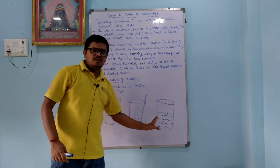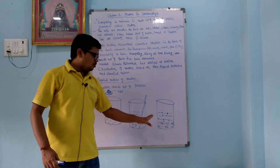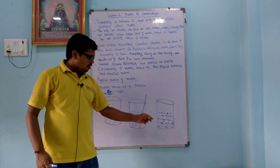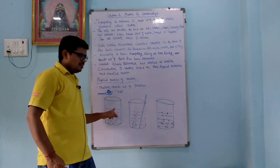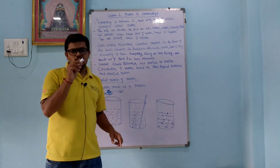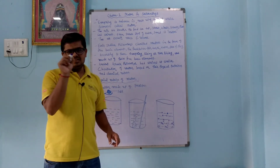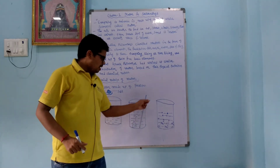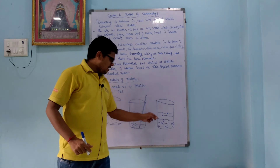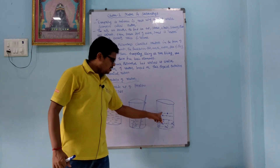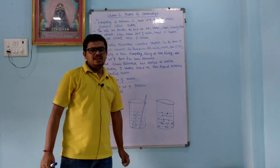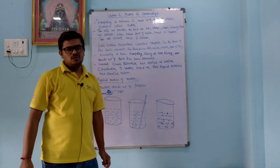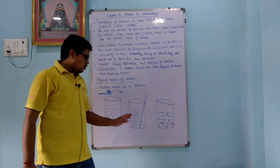Why is salt soluble in water? Because between water molecules there are gaps. When we add NaCl, the NaCl particles take up positions in those gaps between water molecules, and that is why NaCl dissolves easily in water.